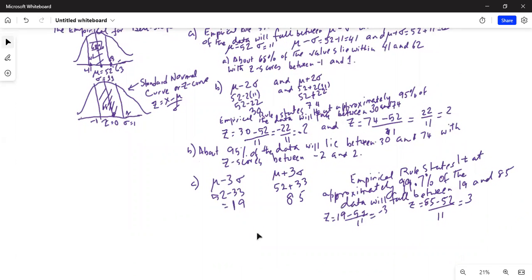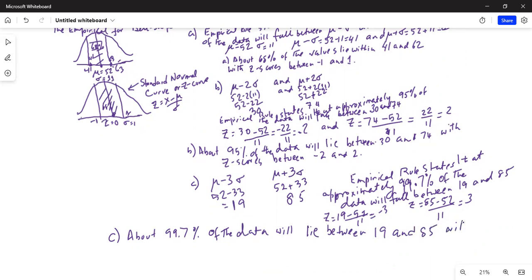Answer to part C is about 99.7% of the data will lie between 19 and 85 with z-scores between minus 3 and 3.